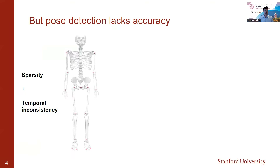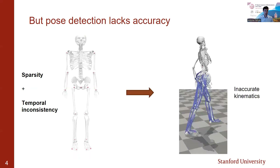The first problem is that the set of video keypoints identified by most pose detection algorithms is sparse, and therefore you lack information to robustly capture the kinematics of the joints between the shoulders and the hips. The second problem is that most algorithms work frame by frame, and there is therefore a risk of non-smooth trajectories across frames. Together, these problems can lead to inaccurate joint kinematics, as illustrated here.